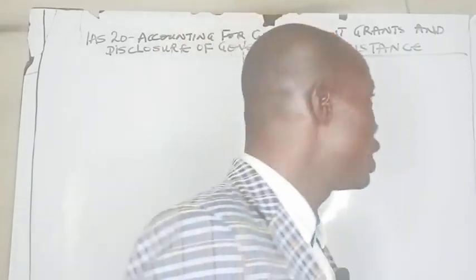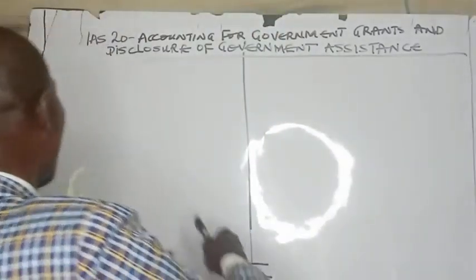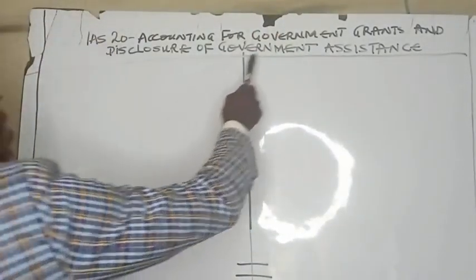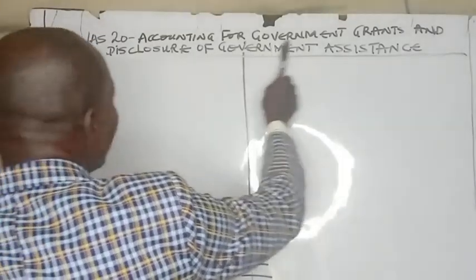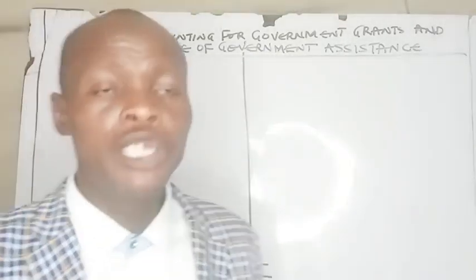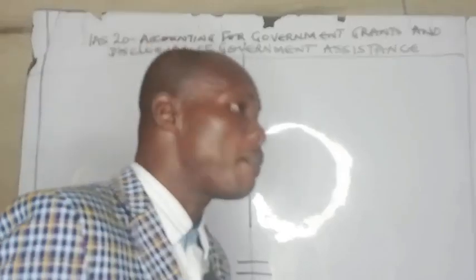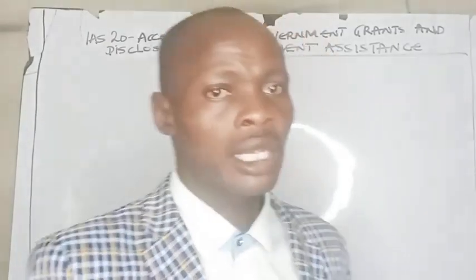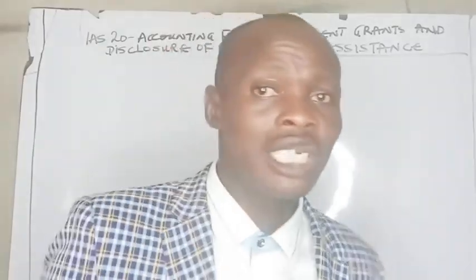Welcome to Ezekiel Academy YouTube channel. In this lecture, I want to examine IAS 20, accounting for government grants and disclosure of government assistance. This is my second video on the topic. If you are coming across my lecture for the first time, please like the video and share it with others. If you are a returning subscriber, thank you for being part of this channel.